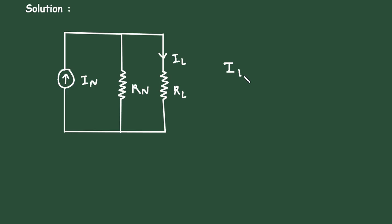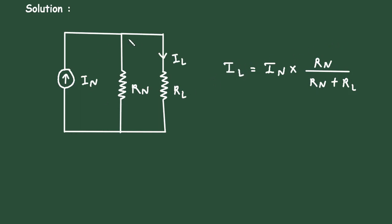The load resistor is Rl and the load current is Il. The formula to calculate Il is equal to In multiplied by Rn divided by Rn plus Rl. This formula is according to the current division rule, and this circuit is called Norton's equivalent circuit.